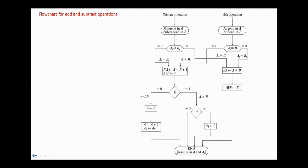Here we have the flowchart for add and subtract operations. First, if the operation is add, we compare the signs. If they are equal — and they are equal in the case if A is positive and B is positive, or A is negative and B is negative — then we just add the magnitudes of A and B, and the sum is transferred to the A register and the carry to the E flip-flop. The E flip-flop is transferred to the overflow flag. And if the overflow flag is one, we have overflow. We will have the result in A and the sign of result in AS.